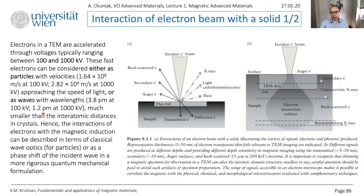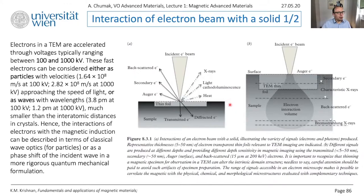What happens if you focus your electron beam on a solid body? There are many different effects. Something will go through if your sample is thin enough — for example, 100 nanometers — then some electrons can be transmitted. Some will be diffracted. Some will be reflected and backscattered — those are electrons scattered from the nucleus, mechanically scattered. There will be re-emitted secondary electrons. Your beam of electrons can change something and new electrons will be emitted. There will be Auger electrons, heat, possibly X-ray emission, and luminescence. The principle is that many different techniques use different physical processes to get information about a material.